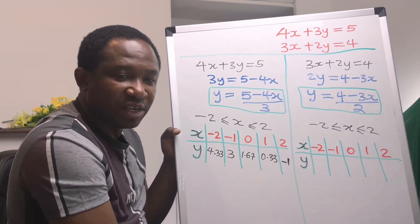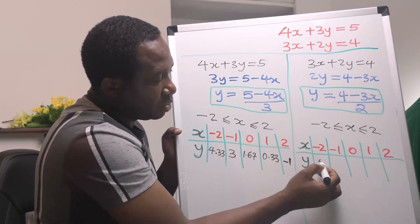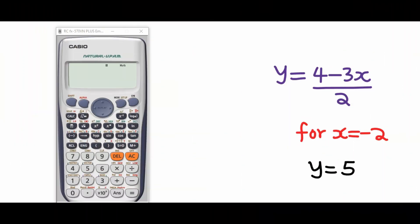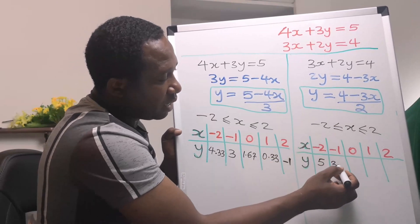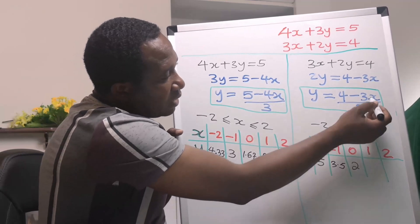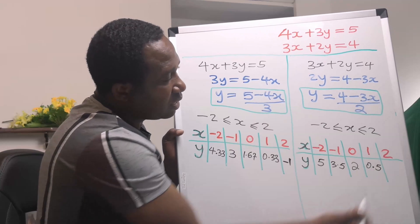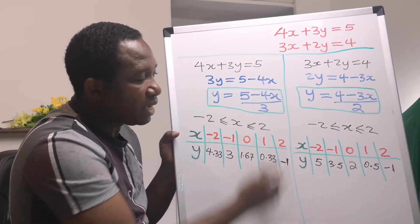For the second equation, substituting x equals minus 2 gives (4 minus 3 times minus 2) divided by 2, which equals 5. Substituting x equals minus 1 gives 3.5. At x equals 0, y equals 2. At x equals 1, y equals 0.5. At x equals 2, y equals minus 1. Both tables must be plotted on the same graph paper.